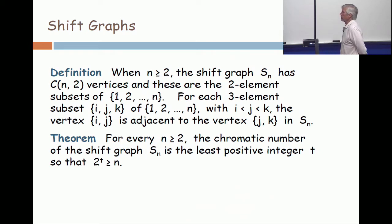What is a shift graph? When n is at least 2, the shift graph S_n has C(n,2) vertices, or n choose 2. These vertices are the 2-element subsets of {1, 2, ..., n}.